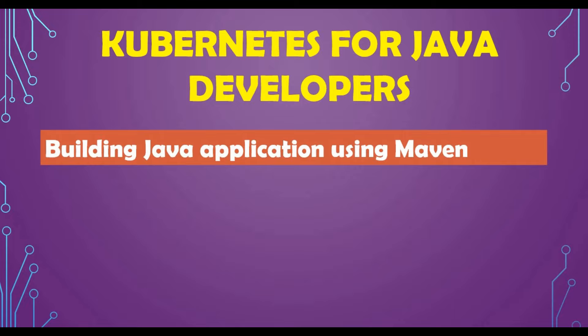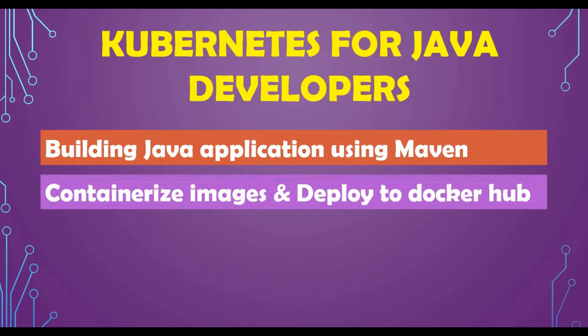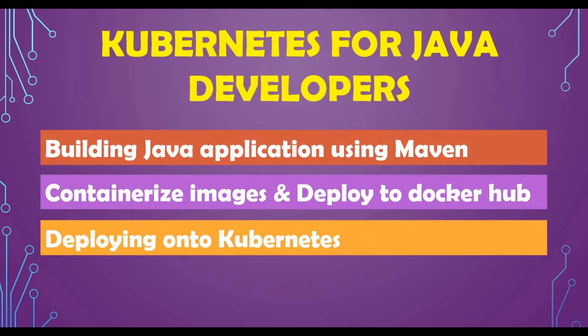What we are going to see in this tutorial: we will be seeing how to build your Java application using Maven, because you need to build your JAR file or WAR file using Maven build. We will build a basic Java application, get the target JAR file, containerize that JAR file with a Dockerfile, build a Docker image, deploy that image to Docker Hub, and then deploy services and deployments in the Kubernetes cluster.